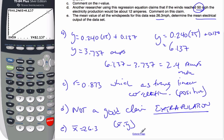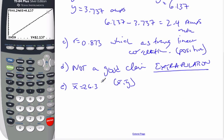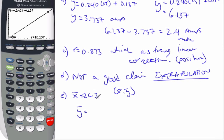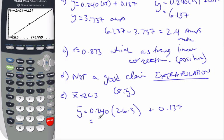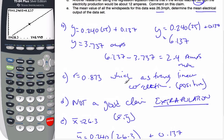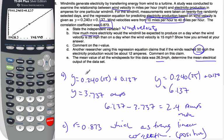So if I want to find y bar, I just simply plug it into my equation, 0.240 times 26.3 plus 0.137. Use my calculator, I'm going to trace at 26.3, and I get 6.45 amps. And that's to three significant figures. So using the regression line, we can find out lots of information.